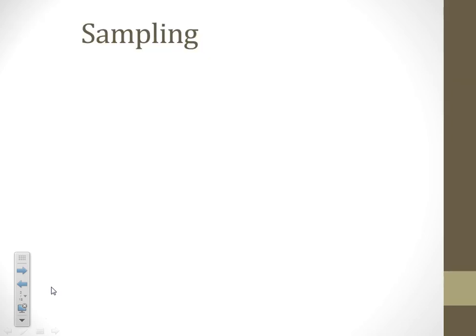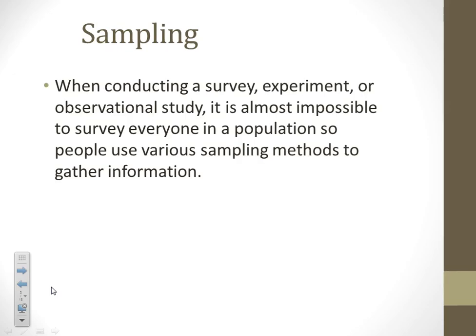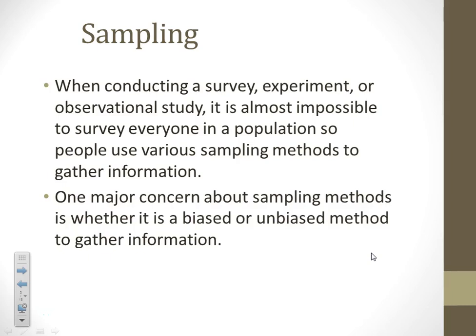Now let's talk about sampling. When you are conducting a survey, experiment, or observational study, it's almost impossible to survey everyone in a population — it's very hard to ask every single person in America a question. So we have to take just a sample to gather that information.